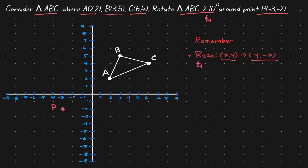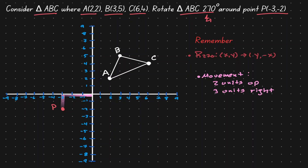Don't forget that this rule has a restriction — the center of rotation needs to be at the origin, which is not the case right now, as our center of rotation is at a different point. So let's move our center of rotation to the origin. To do that, we need to move two units up and three units to the right. After performing that movement, we place the center of rotation at the origin, and now apply the same movement to every point of the triangle.